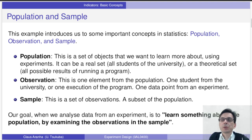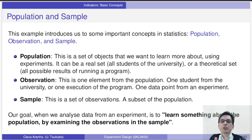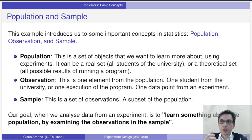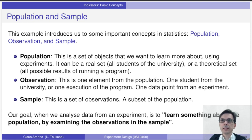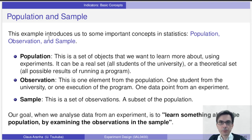Before we start to answer these questions, let's note that we are starting to work with some very important concepts in statistics. Let me explain these concepts with their actual names, because we are going to use these names a lot in this course: population, observation, and sample. The basic idea of an experiment is to gather data about a system so that we can characterize and learn about this system. These terms — population, observation, and sample — refer to the relationship between the system that we are studying and the data that we obtain from the experiment.